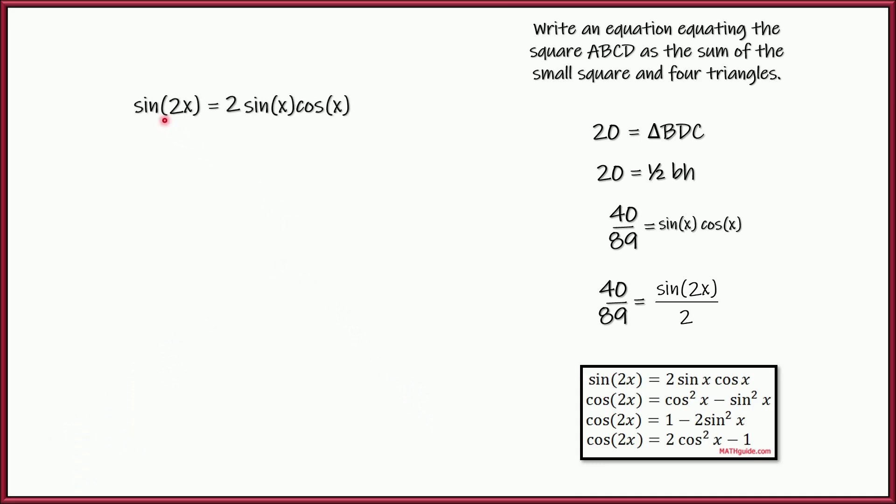Right? So the double angle identity is the sine of 2x is equal to 2 sine x cosine x. So all you got to do is divide both sides by 2. And there you go. Sine x times cosine of x is equal to sine of 2x divided by 2. So we went ahead and substituted just like that.